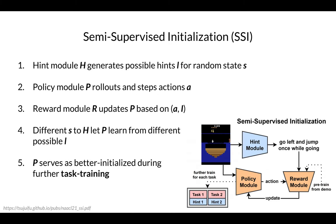There are several steps in our SSI. First, we have a hint module H that generates possible hints L for random states. The policy module P selects actions A based on state S. With action A and hint L, the reward module R updates policy module P based on the correlation, just as the baseline EXT Language does. By repeating this process numerous times with different states S fed to hint module H, policy module P learns from different possible hints L. Finally, policy module P serves as a better initialized policy during task training.